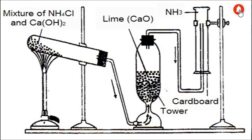Apparatus required for this: hard glass test tube, delivery tube, burner, gas jar, and lime tower. Chemicals required: ammonium chloride and calcium hydroxide, which produce ammonia gas.